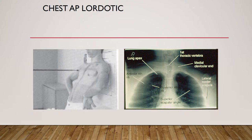The AP lordotic chest is not taken very often. The doctor orders it to better demonstrate the apices of the lung without the clavicles in the way. The patient stands about 30 centimeters (one foot) away from the image receptor and leans back against the chest board. Hands are on the hips, palms out, shoulders rolled forward. Center to the mid-sternum; the top of the image receptor should be about three inches above the shoulders. The central ray is perpendicular to the image receptor, centered to the mid-sternum about three to four inches below the jugular notch. This is taken at 72 inches. Collimate on four sides to the area of the lung fields, with the top border of the light field to the level of the vertebral prominence. Expose at the end of the second full inspiration.